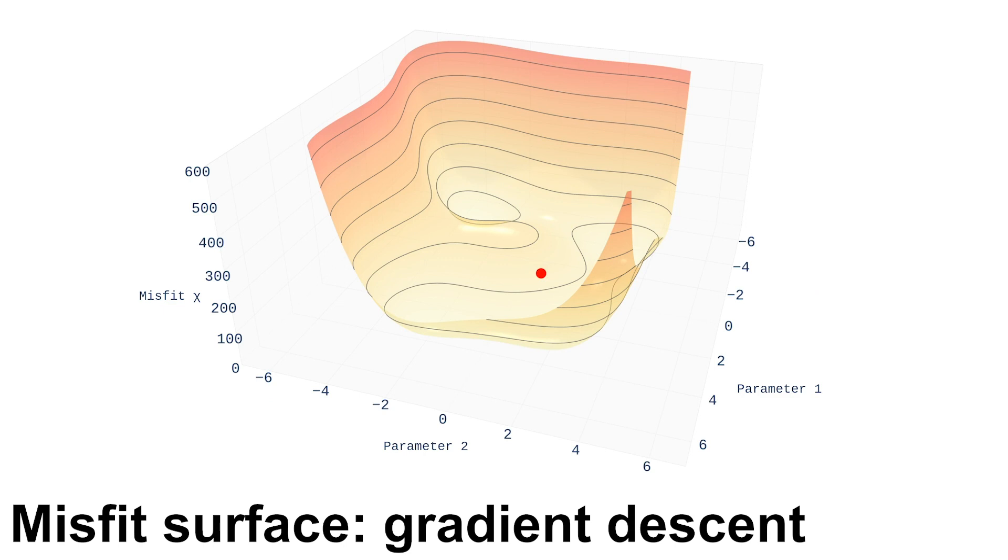Now the classical approach to make an image of the subsurface using these gradients is to employ them in a minimization algorithm. This is an animation of this process. The surface you see here is our misfit. It represents the quality of our model, lower being better. The two horizontal axes represent the model parameters, such as wave velocity and density.